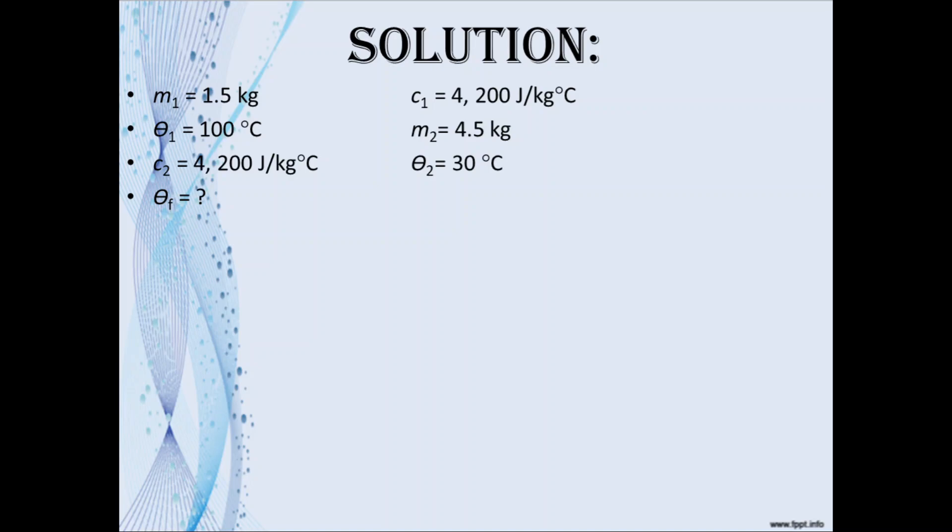m₂, the mass of the cooler water, is 4.5 kilograms. Since it is water also, it would be 4200 joules per kilogram degree Celsius for its specific heat capacity. The initial temperature of the cool water is 30 degrees Celsius as stated in the problem. The final temperature is what we're to find.